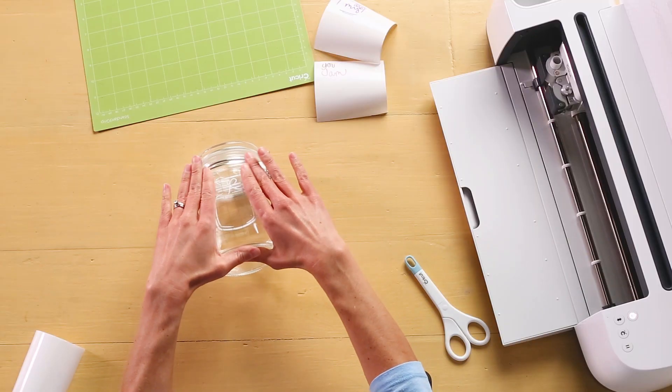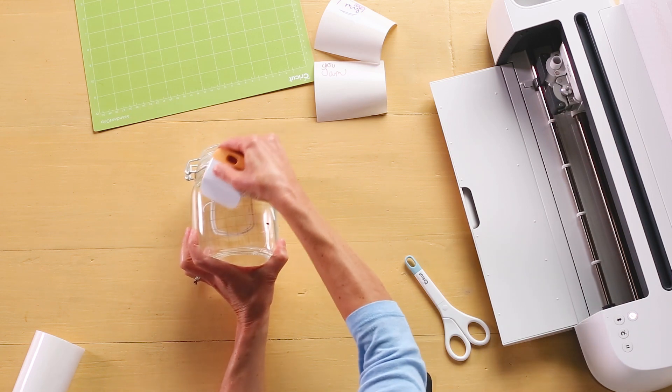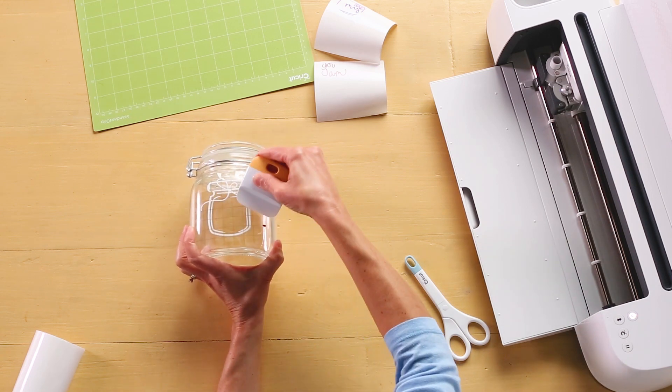Working from the center to the edges, press firmly on the transfer tape, or burnish with your Cricut scraper to remove any bubbles.